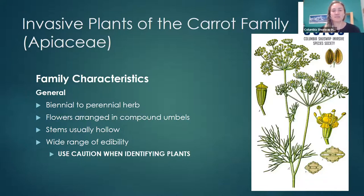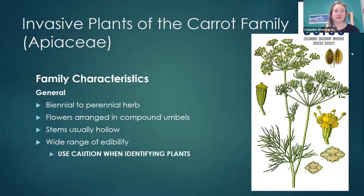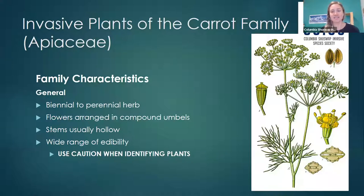These are some general characteristics of plants in the carrot family. They're generally biennial to perennial plants, and their flowers are arranged in compound umbels. Their stems are usually hollow, and they have a wide range of edibility — some are very edible, while others are deadly poisonous, like poison hemlock.